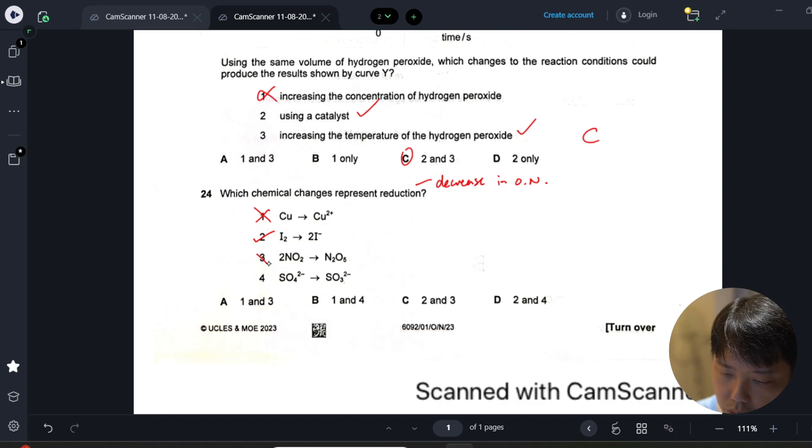All right, you're already starting off with plus six in sulfur. Let's work out the SO3 two minus. Overall charge is two minus, oxygen has a minus six in total, means that sulfur is plus four.